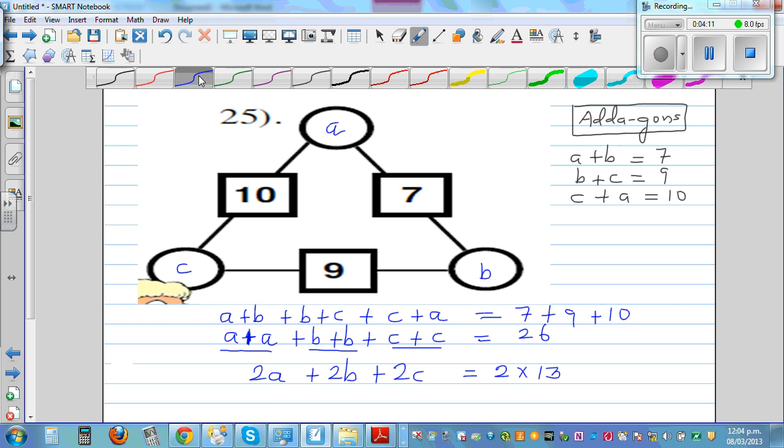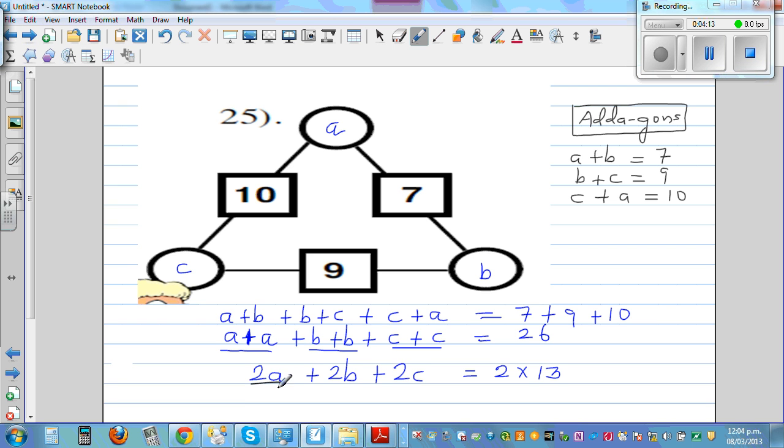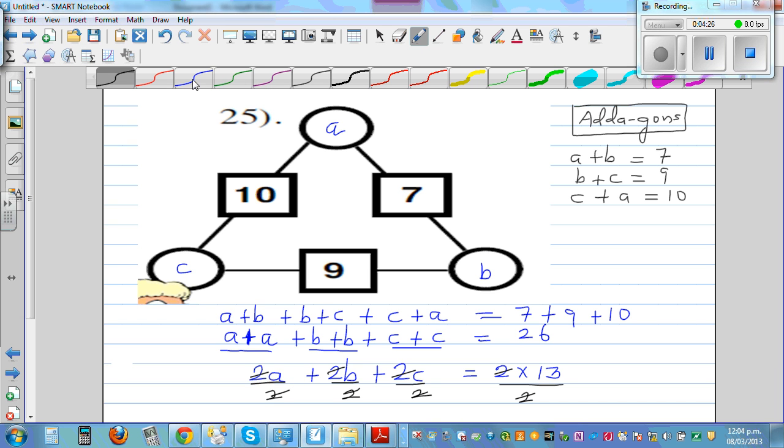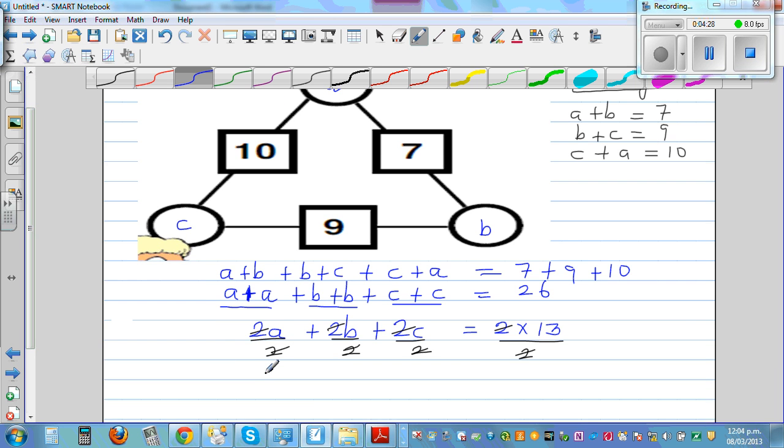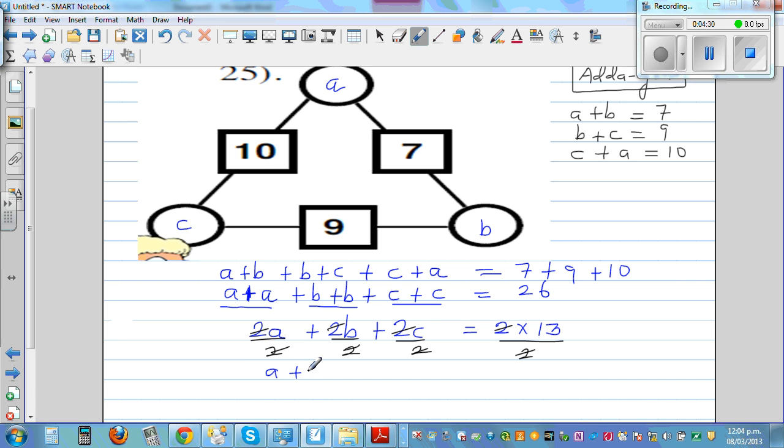So this is 2A plus 2B plus 2C is equal to 26. And I'm going to write 26 as 2 times 13. So now I'm going to divide the whole thing by 2. So 2 and 2 gets cancelled. So your answer is A plus B plus C. The 3 numbers should add to 13.